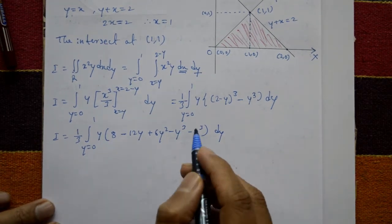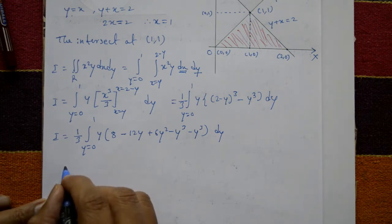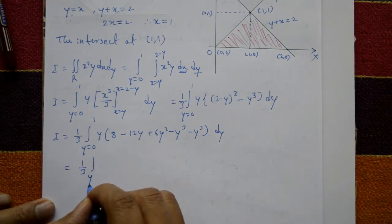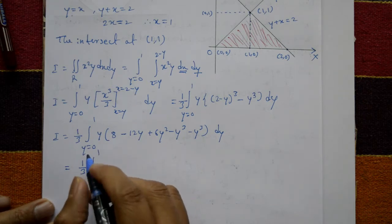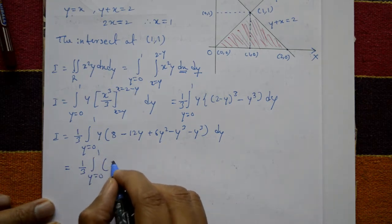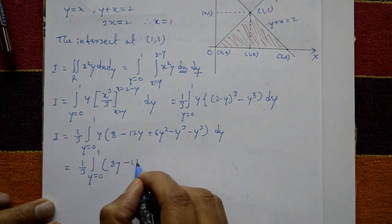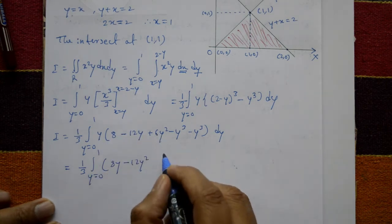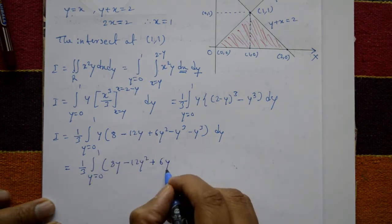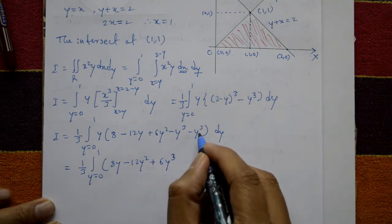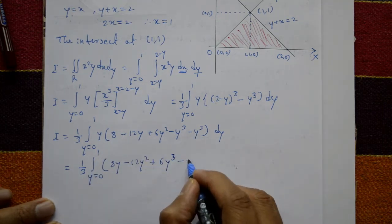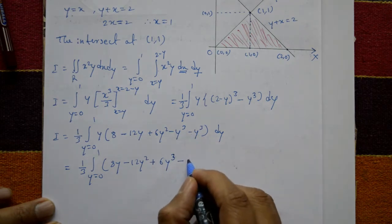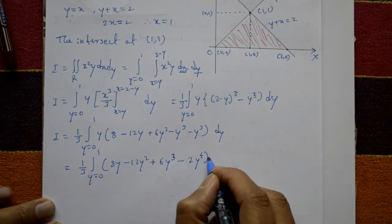Multiply y through each term: I equals 1/3 times the integral from 0 to 1 of 8y minus 12y squared plus 6y cubed minus 2y cubed times y, giving terms up to 2y to the 4th power, with respect to y.